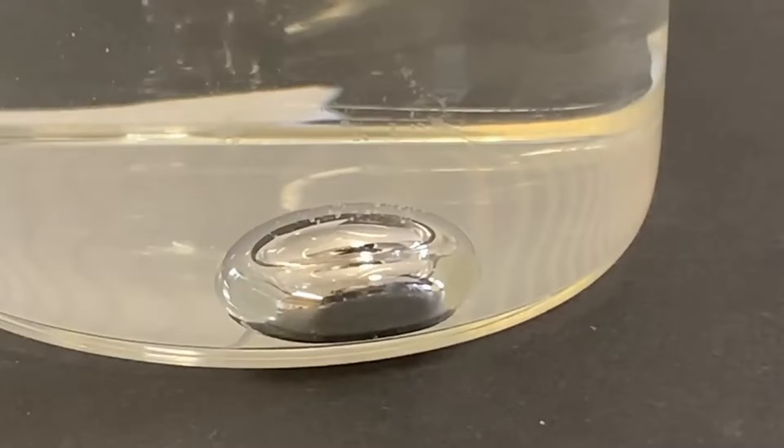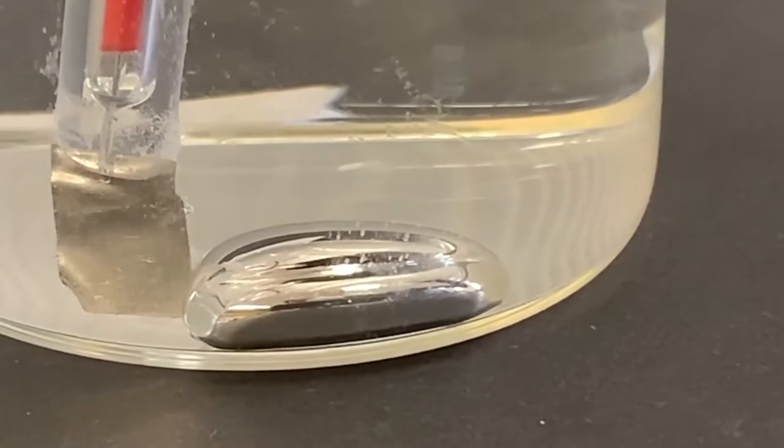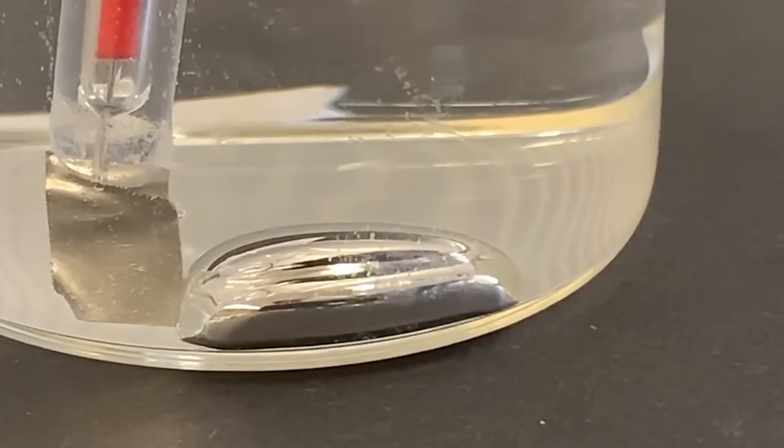First, watch what happens when I touch the droplet with a piece of metal. The droplet flattens out and bubbles form on the metal surface.